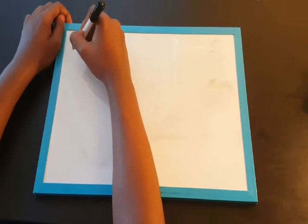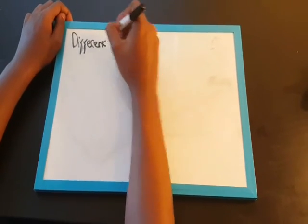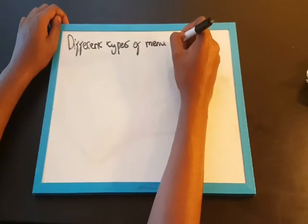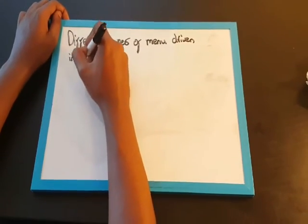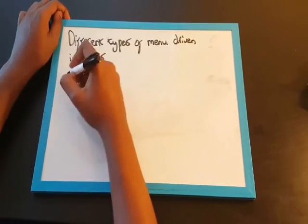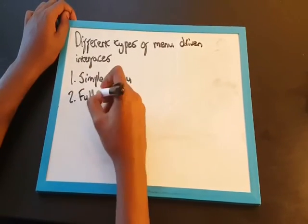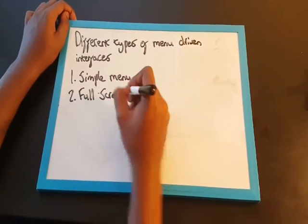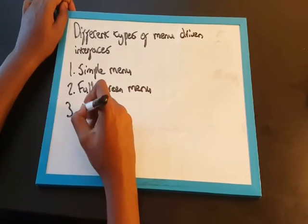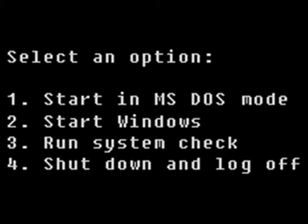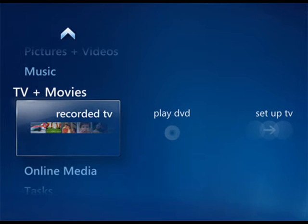There are two types of menu-driven interfaces. There are simple menus in which the user is offered a simple menu from which to choose an option. One menu often leads to a further menu. Part of the screen may have an instruction followed by a numbered list of options to choose from. There are also menu bars, which is a set of options at the top of the screen. When an option is chosen, a drop-down menu may be offered.